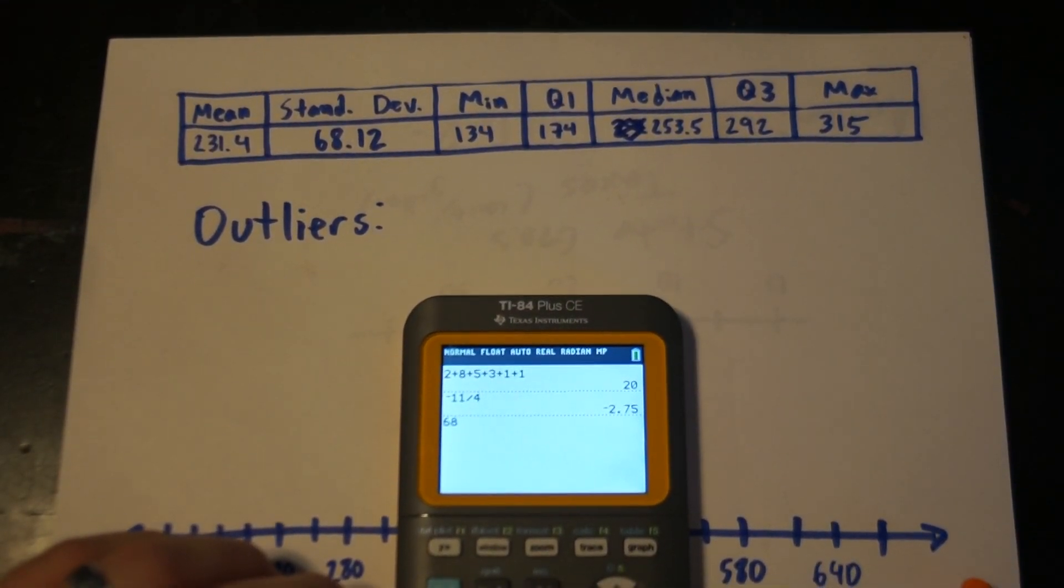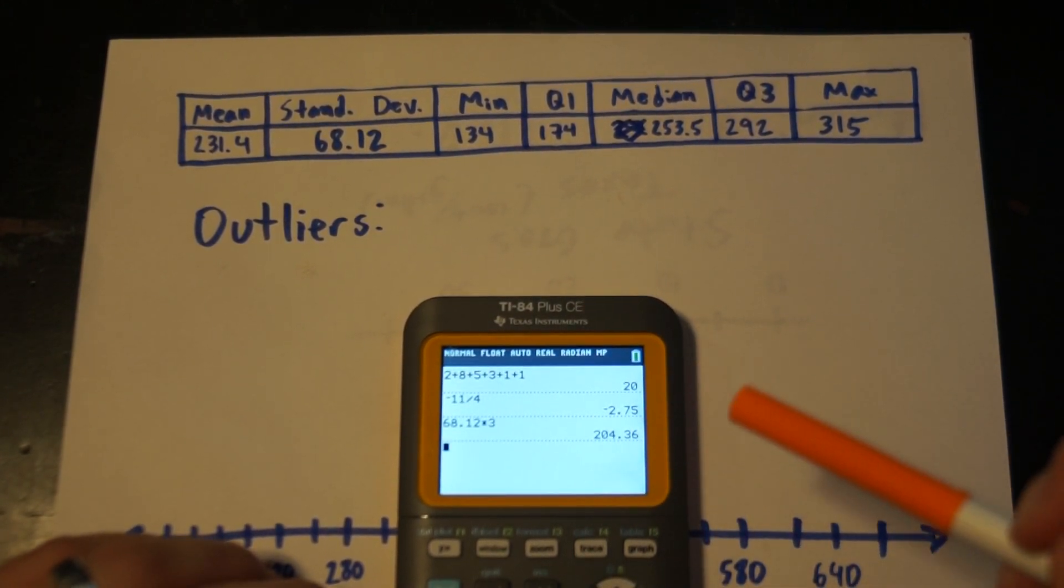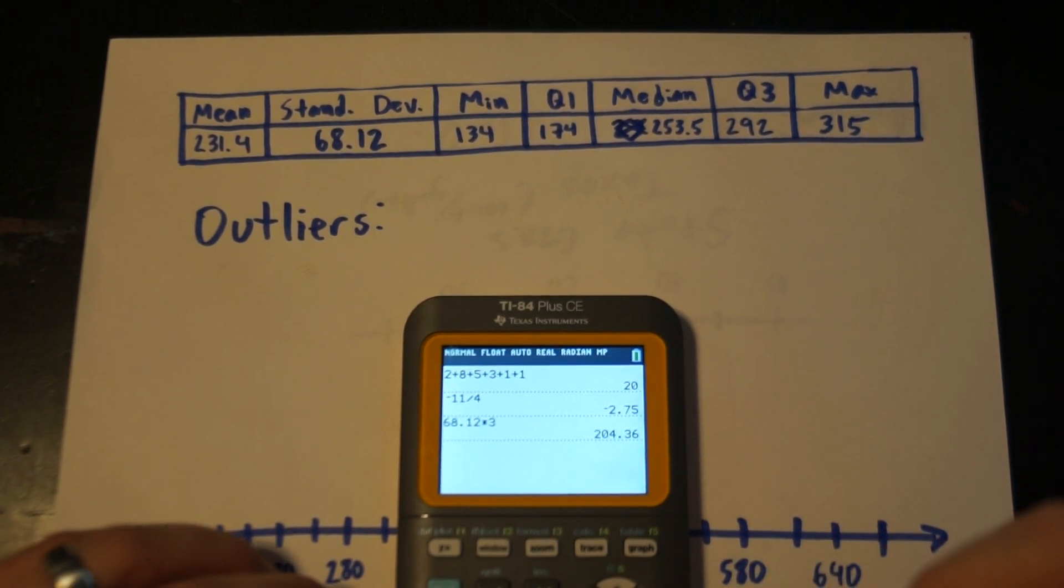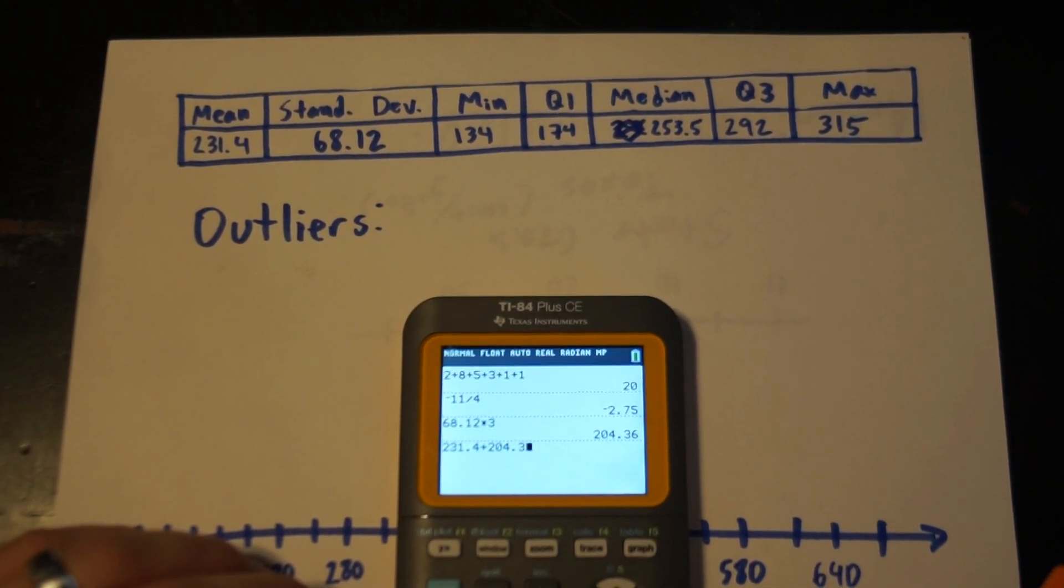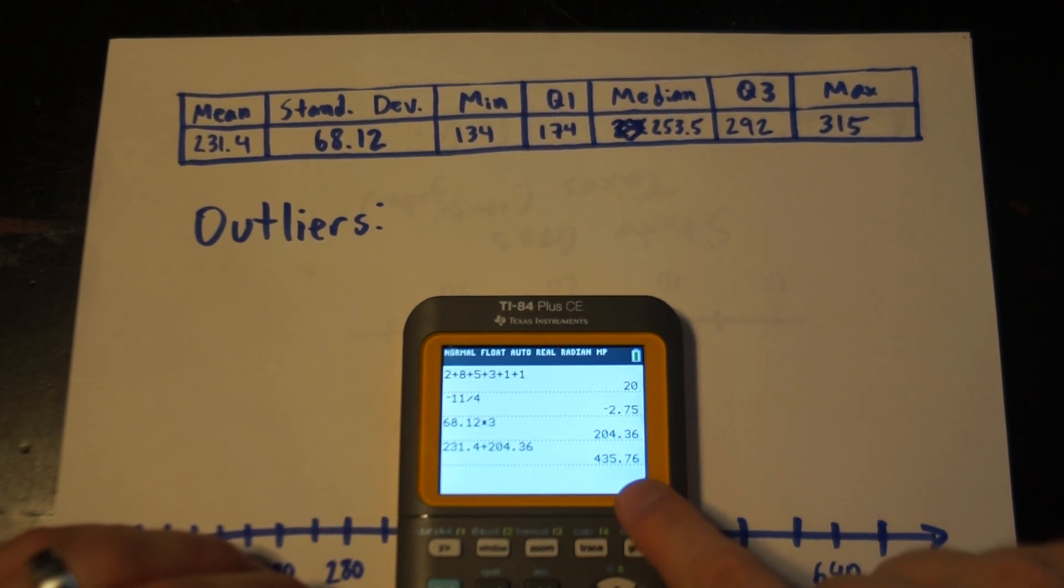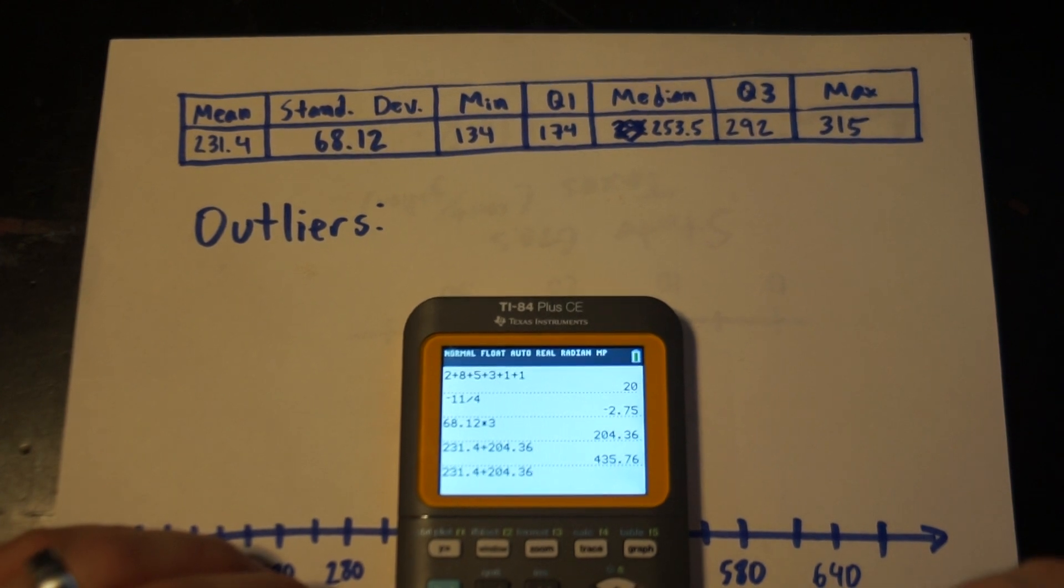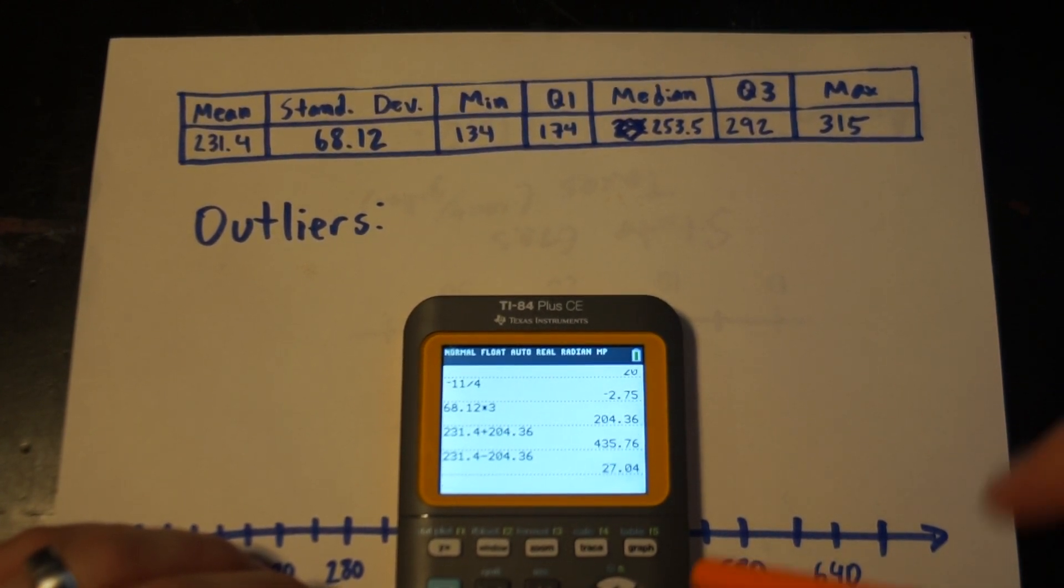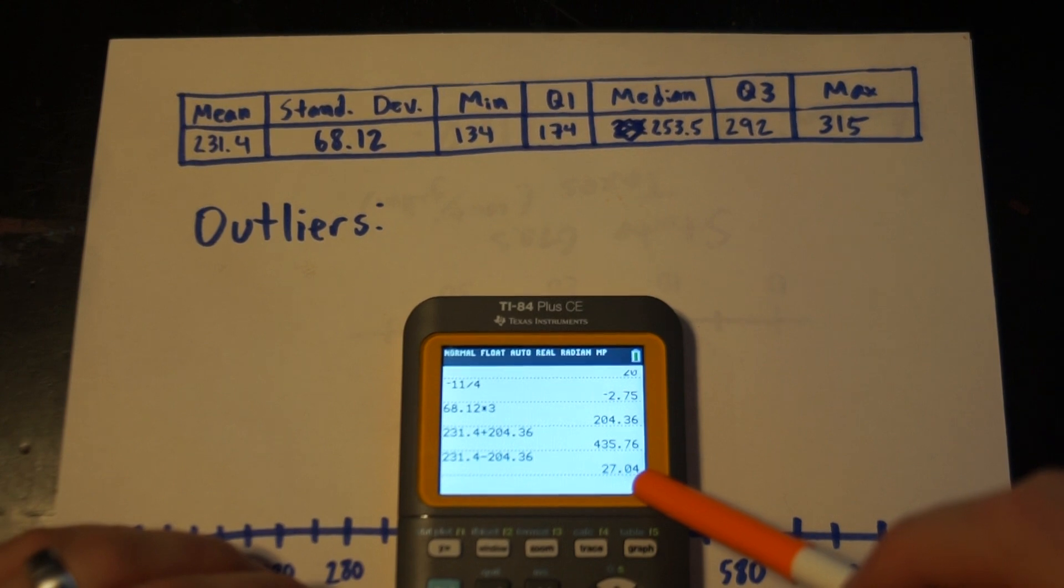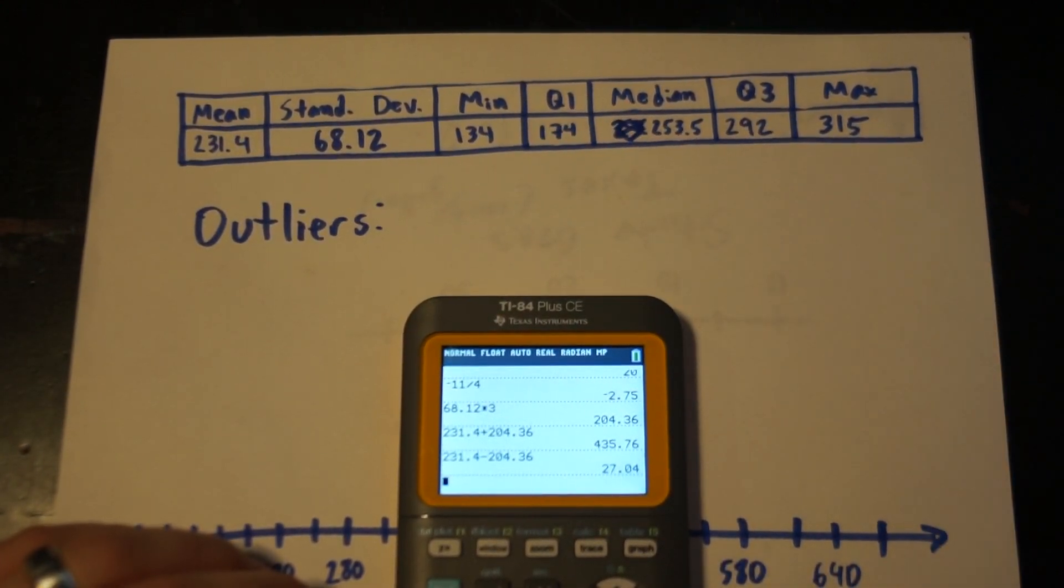So if I take 68.12 times 3, that gives me 204.34. So if I add and subtract that from the mean, which is 231.4 plus 204.36. So anything bigger than 435 would be an outlier or smaller than 27 would be an outlier. So according to standard deviation, do we have any outliers? No, we don't.